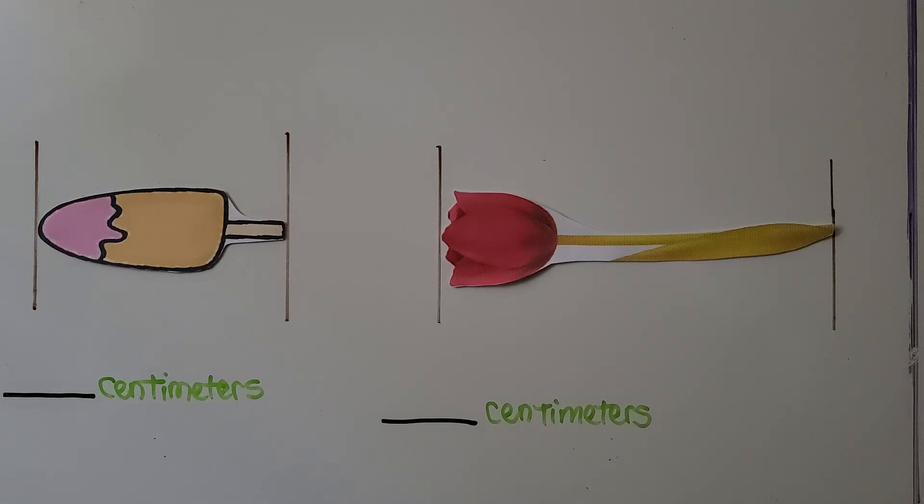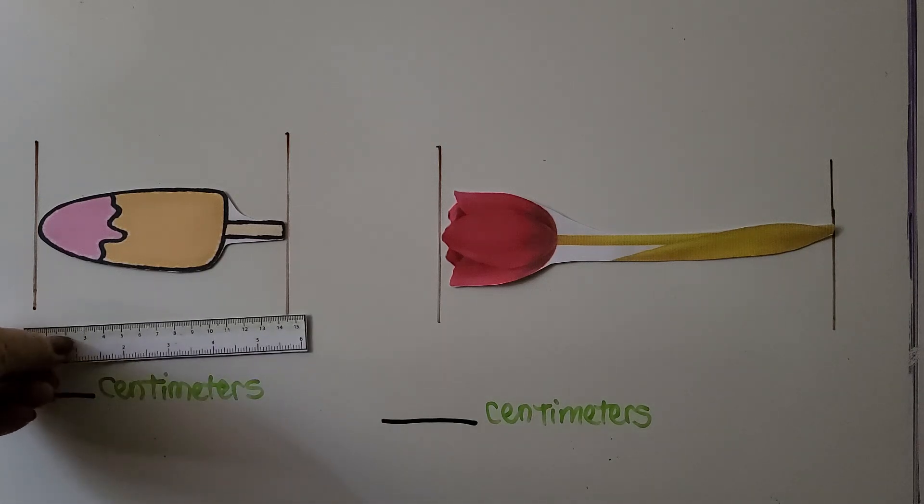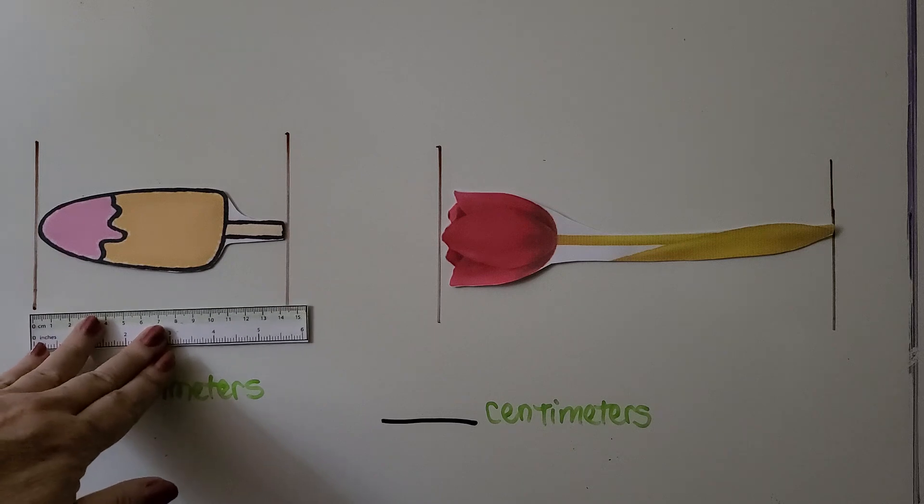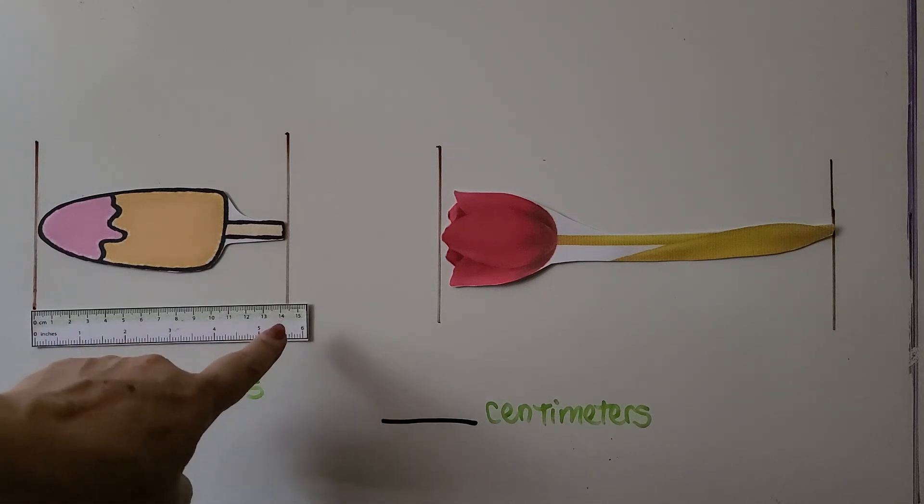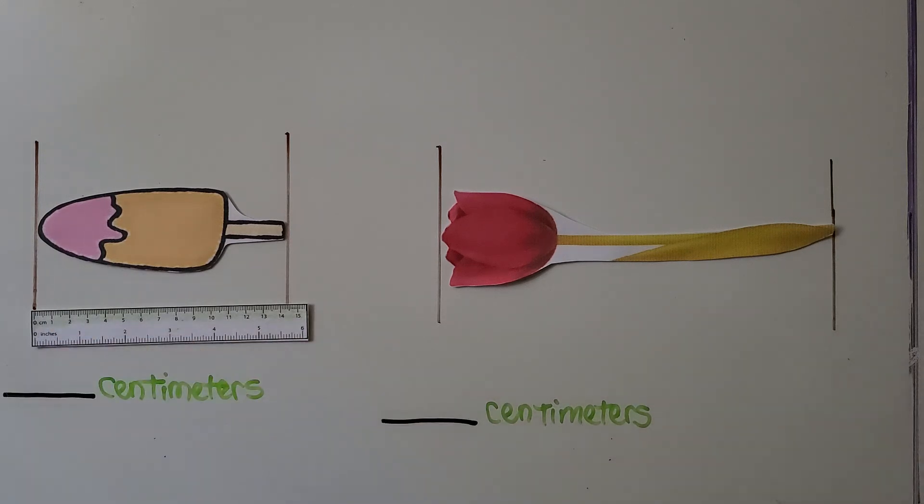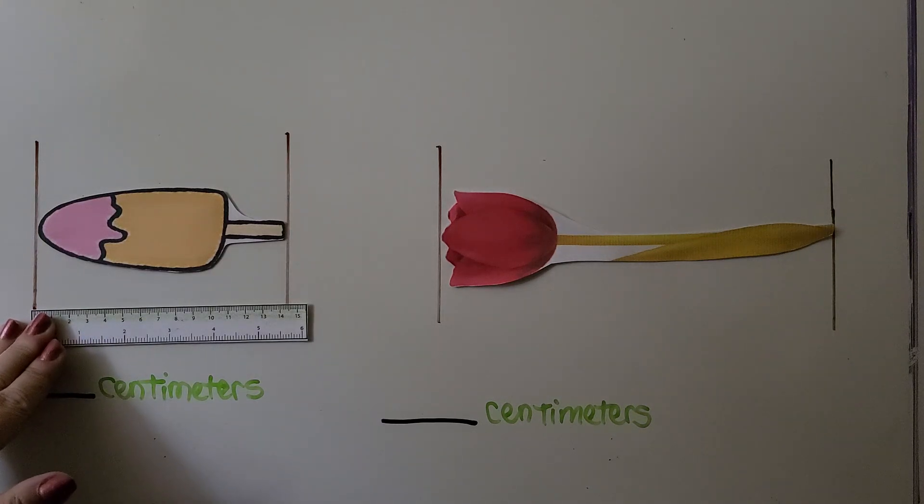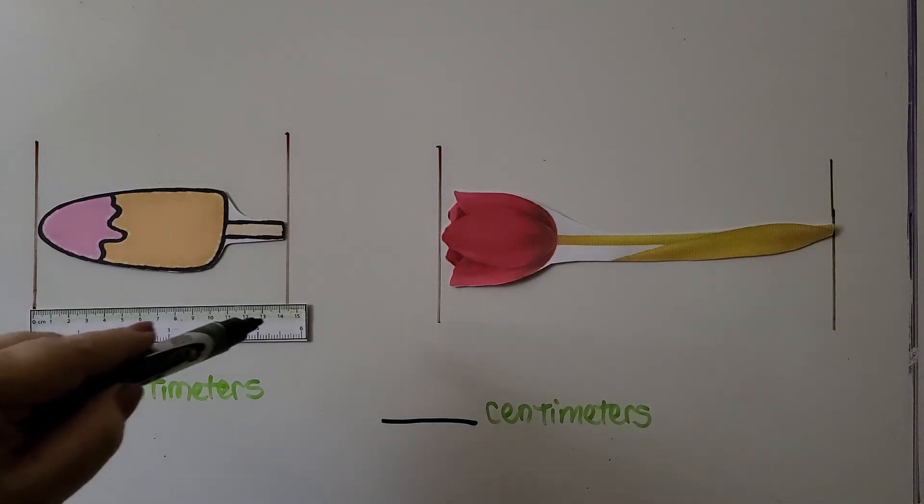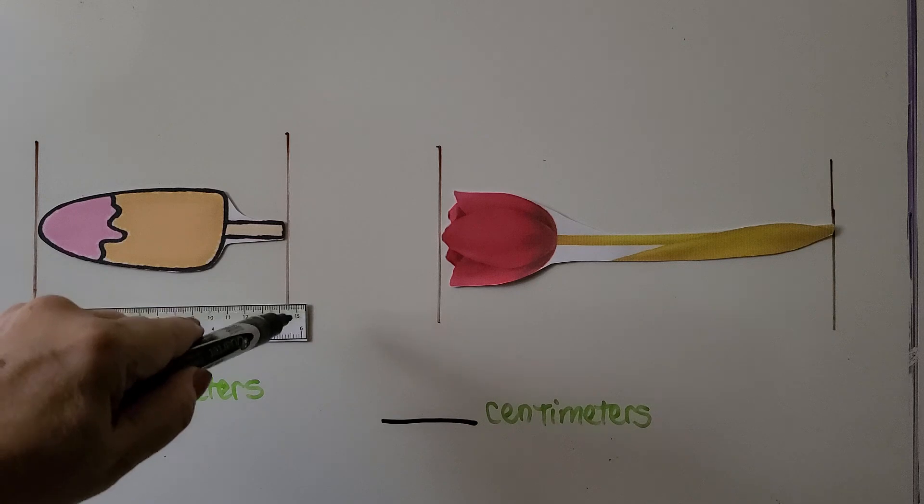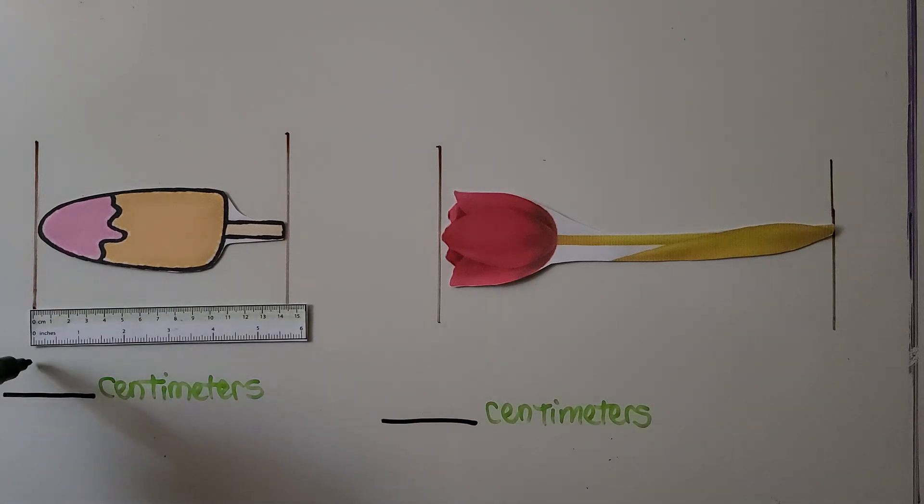We can measure this popsicle. We put our measure up to the line at the zero mark right here, and we see which centimeter it's closer to. Let me line this up with zero really nice. It looks like it's almost in the middle, so I'm gonna say 15. So we'll estimate up because it's in the middle.